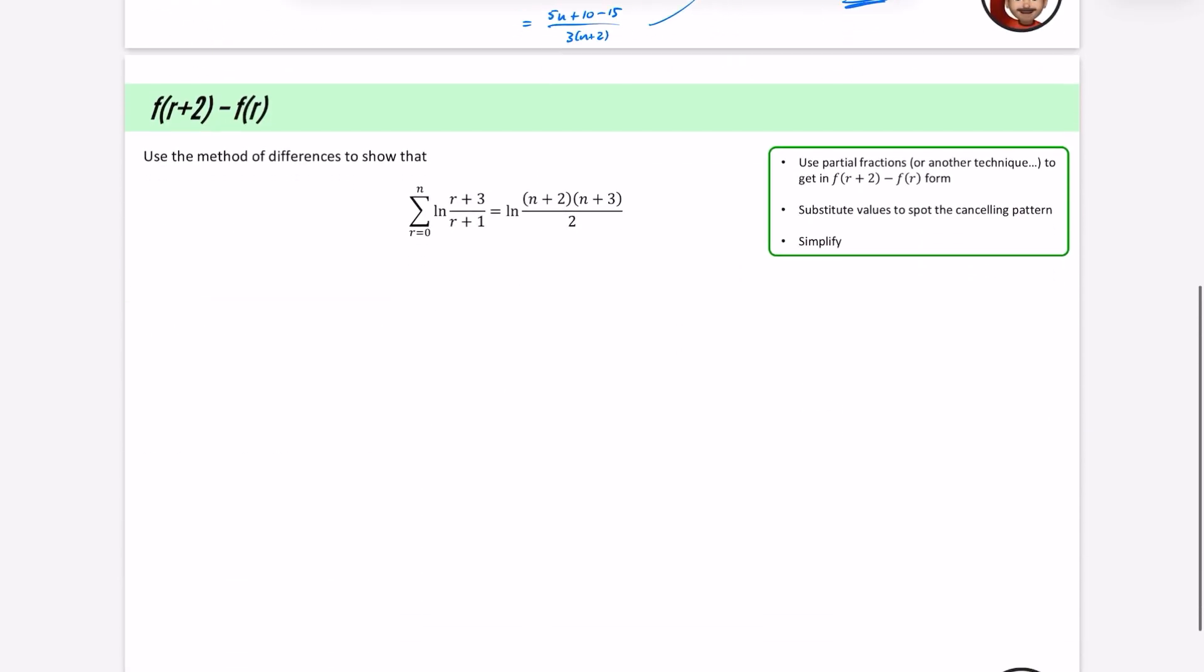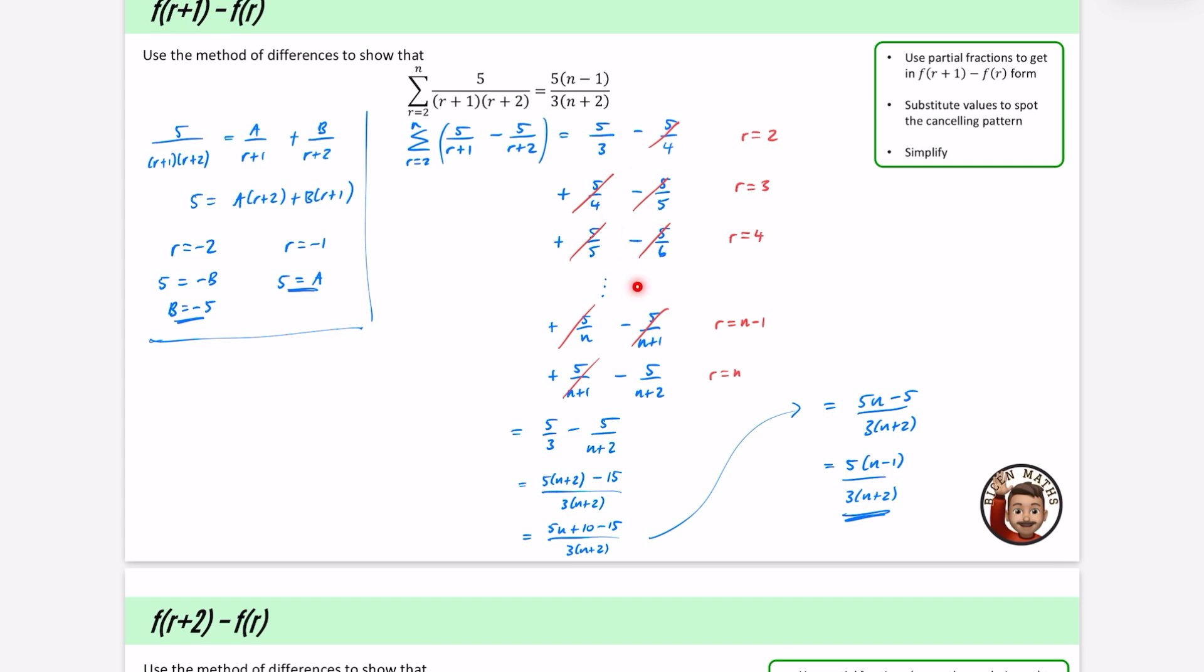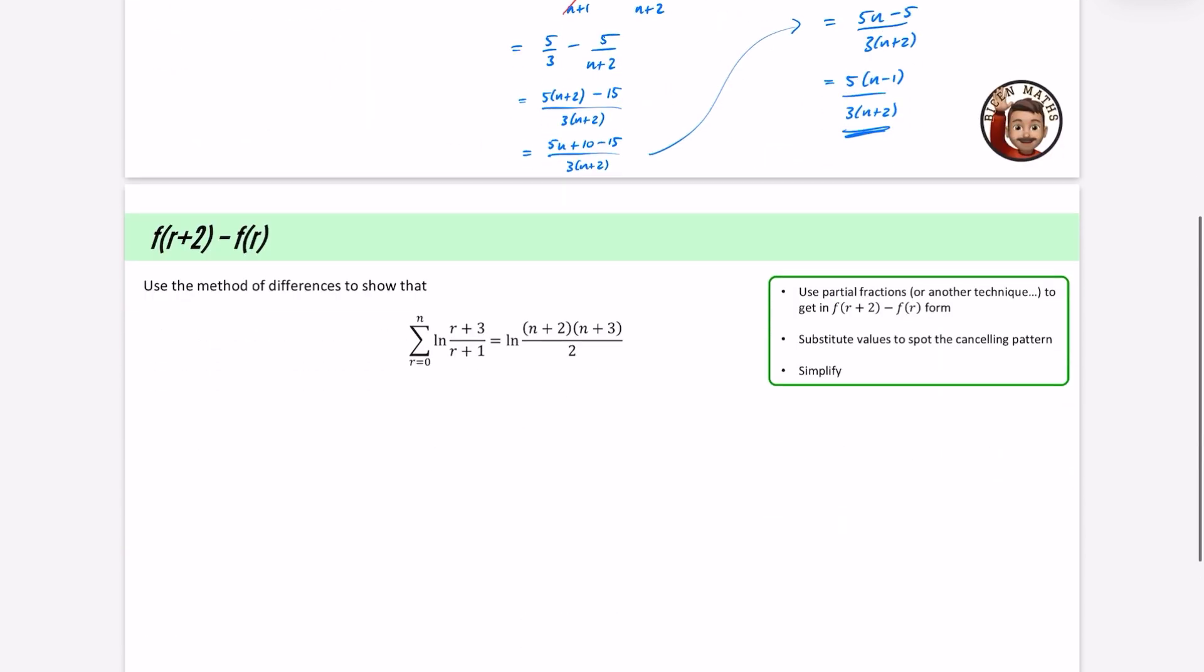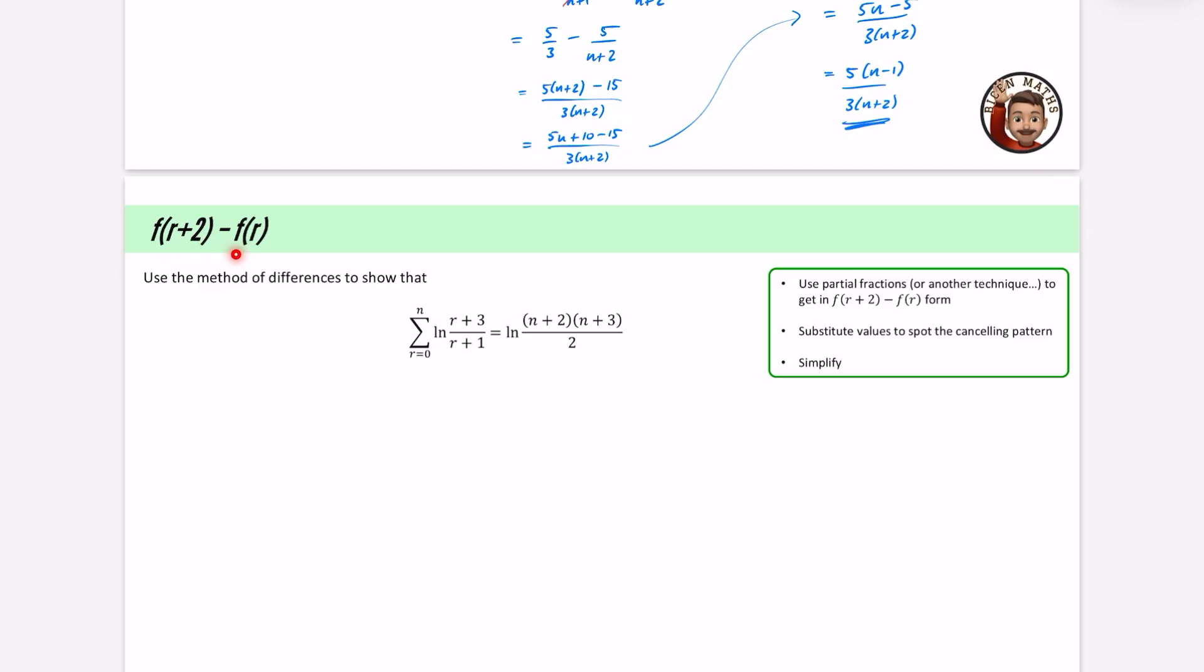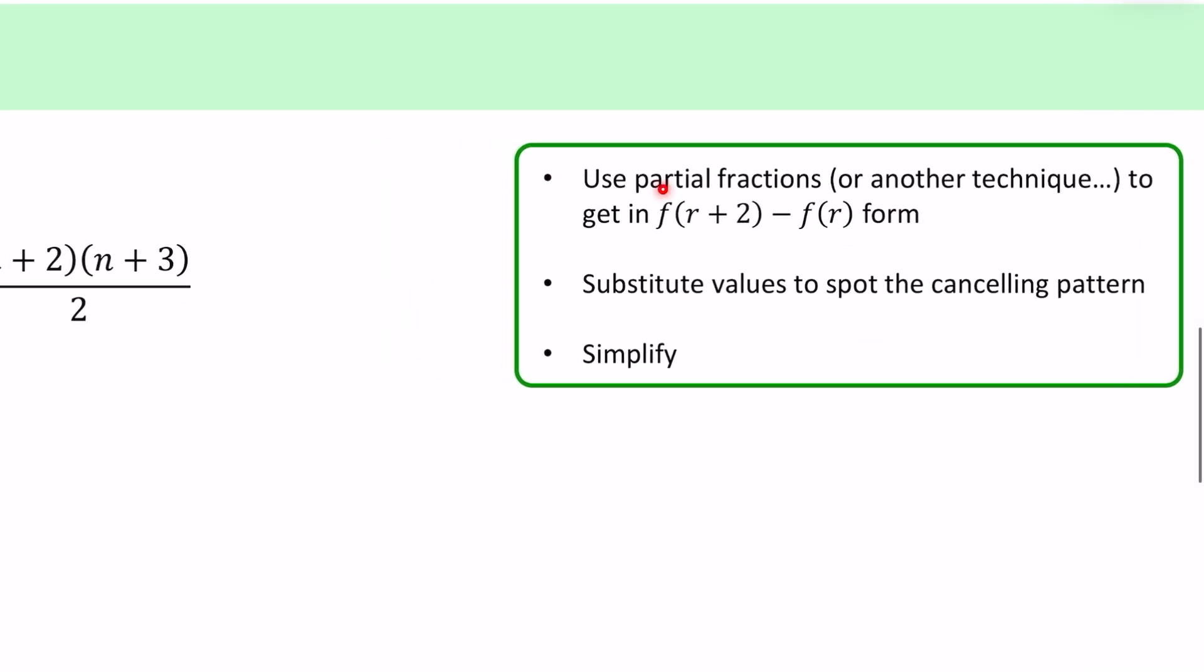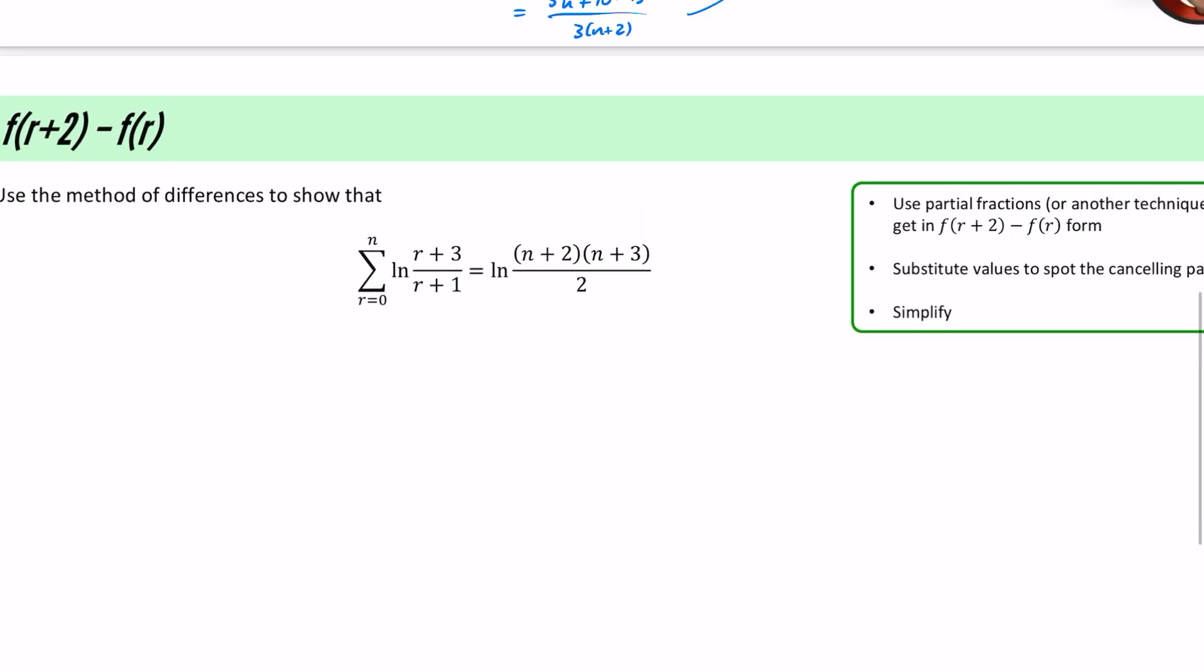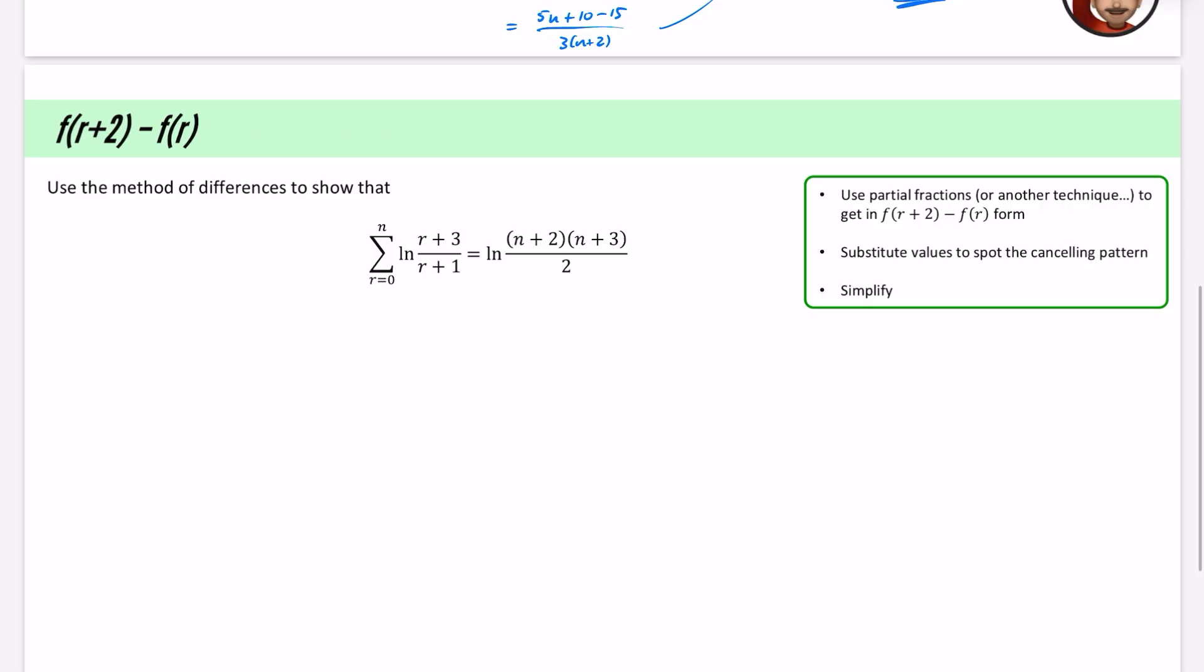Okay, the next kind of question is where instead of there being a gap of just 1, which creates this cancelling pattern, there might be some questions where there is a gap of 2 like this. So exactly the same instructions, apart from instead of saying just partial fractions, I've said you may use another technique to get it into this kind of form. Obviously, there has to be a difference between them.